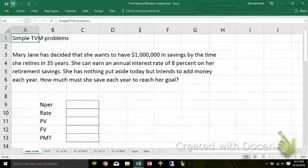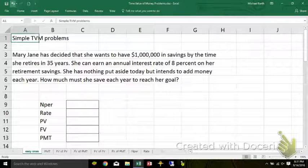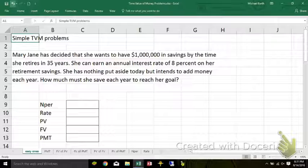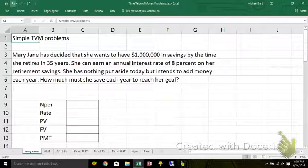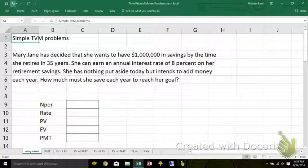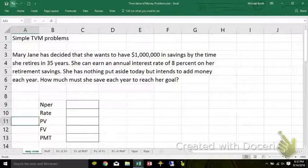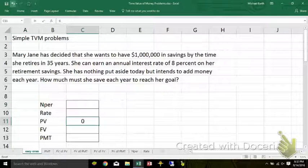Mary Jane's decided she wants a million in savings by the time she retires in 35 years. She earns an annual rate of interest of 8% on her retirement savings. She's got nothing put aside today but wants to add money each year. Today the present value of retirement savings is zero. She has no money saved up.